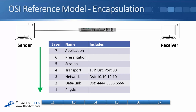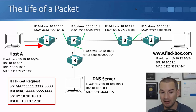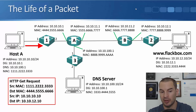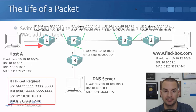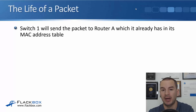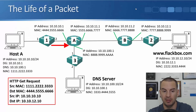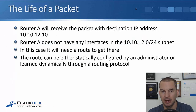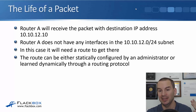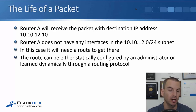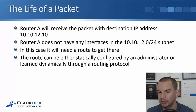Host A puts the web traffic onto the physical wire as an HTTP GET request. Source MAC is 1.2.3, destination MAC is the default gateway at 4.5.6, source IP is 10.10.10.10, and destination IP is the web server at 10.10.12.10. Switch1 sends the packet to Router A. Router A receives it and sees the destination IP is 10.10.12.10, but Router A has no interfaces in the 10.10.12.0/24 subnet, so it needs a route to get there. The route can be statically configured or learned dynamically through a routing protocol configured by the administrator.